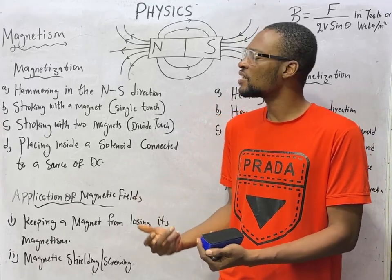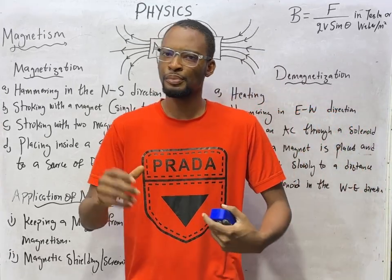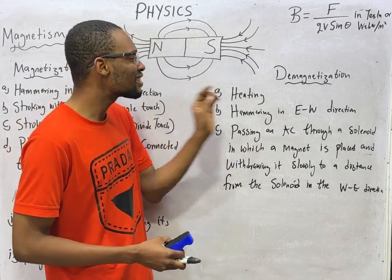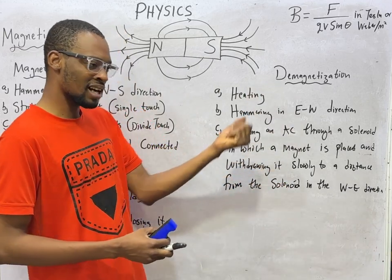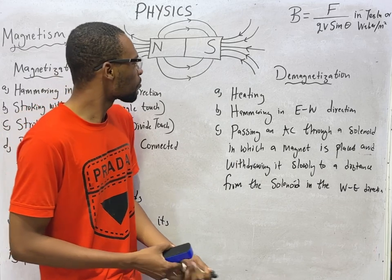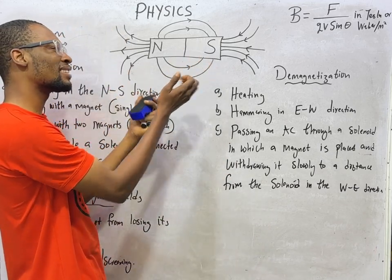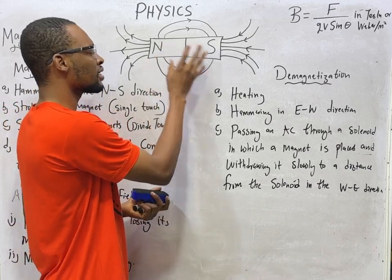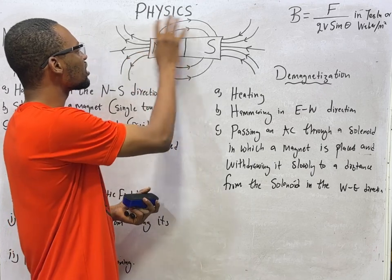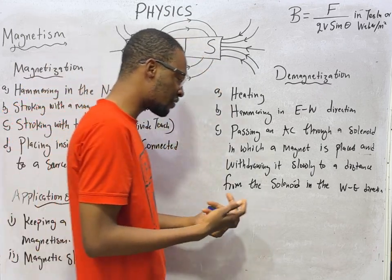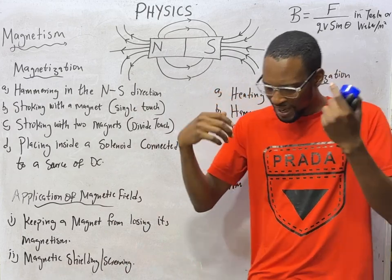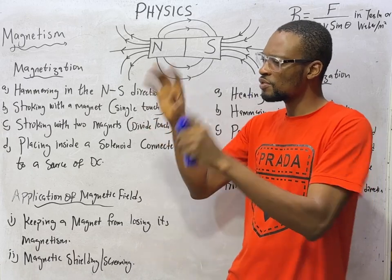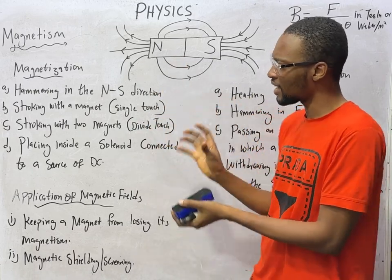Magnetization simply refers to the process of producing magnets. The opposite of magnetization is demagnetization — making a material lose its magnetism. This is a typical magnet diagram. The magnet has two poles: the north and the south pole. We can call these the magnetic lines of force, and I told you that magnetic lines of force are imaginary lines — we just imagine them moving in a circular manner around the magnet.